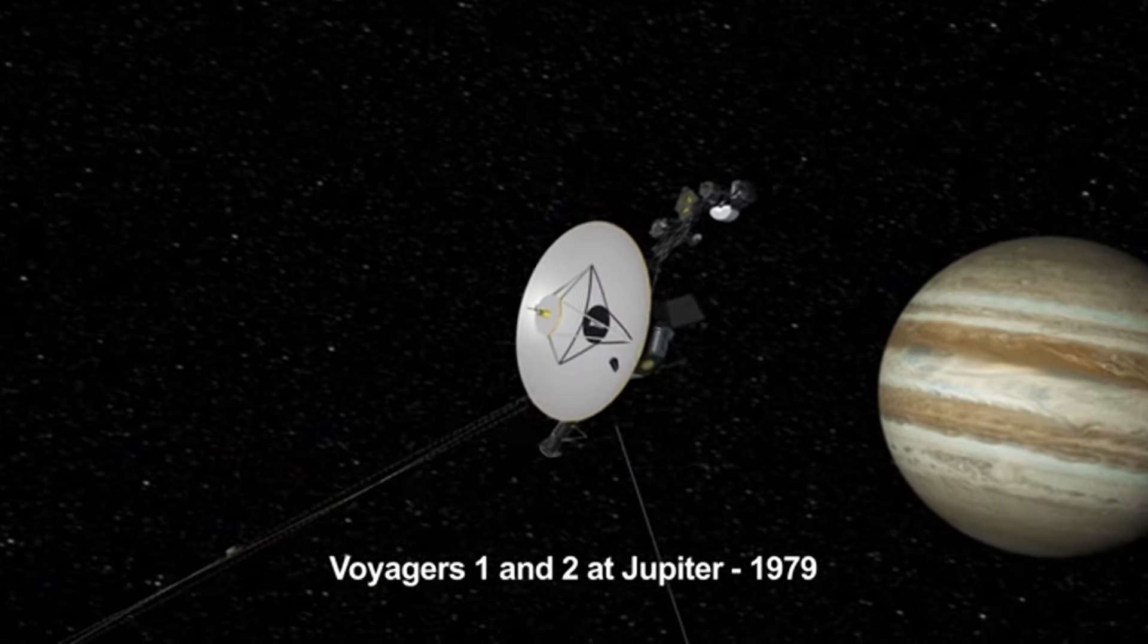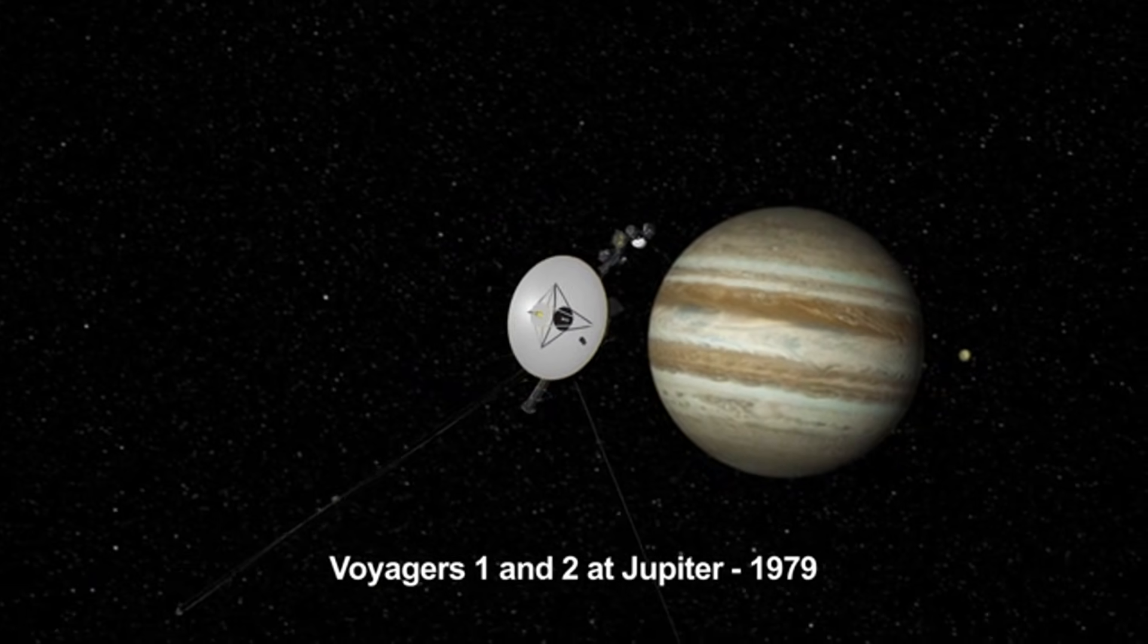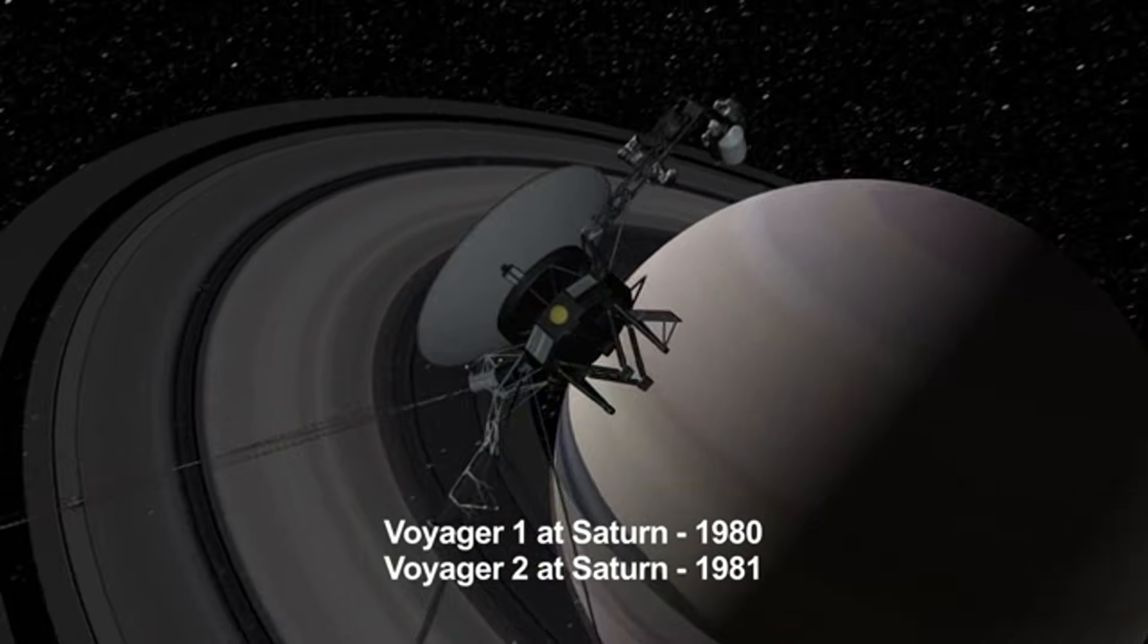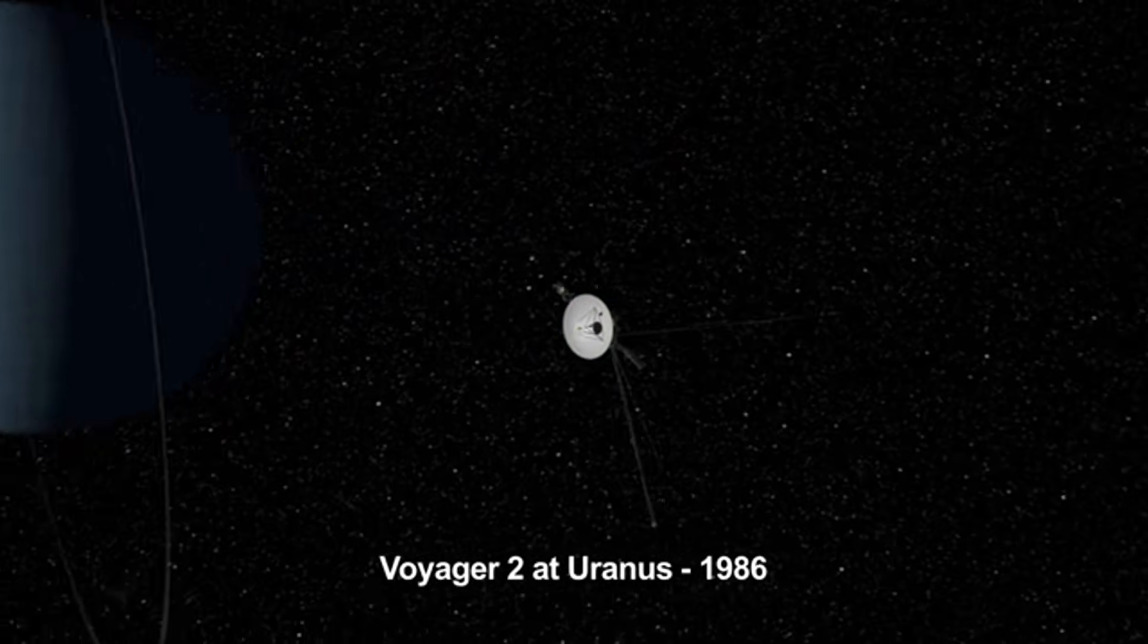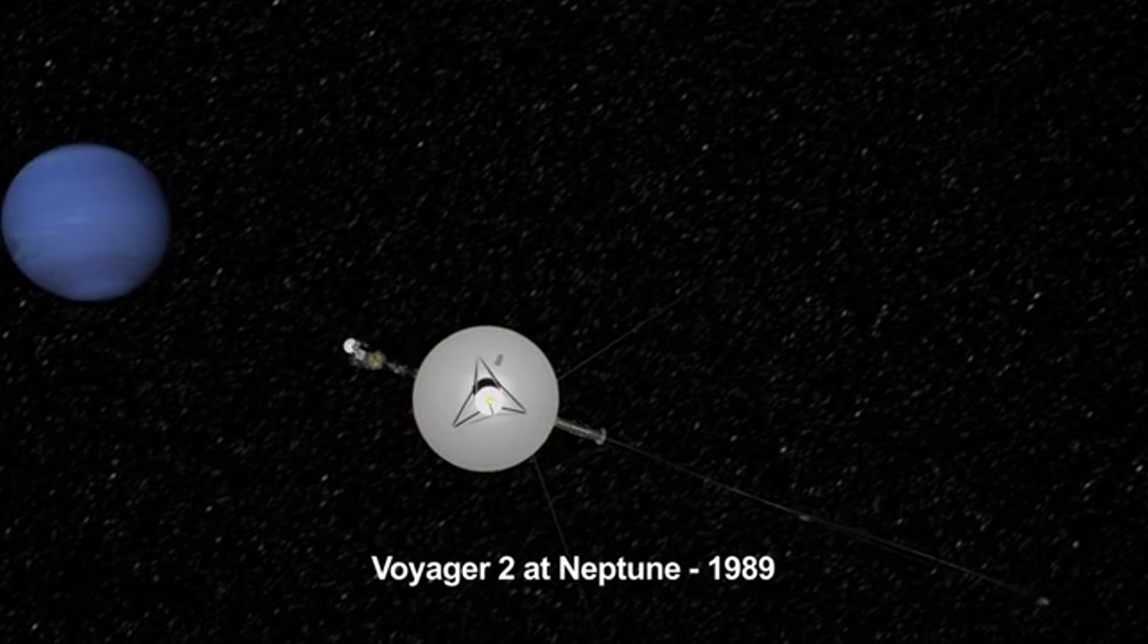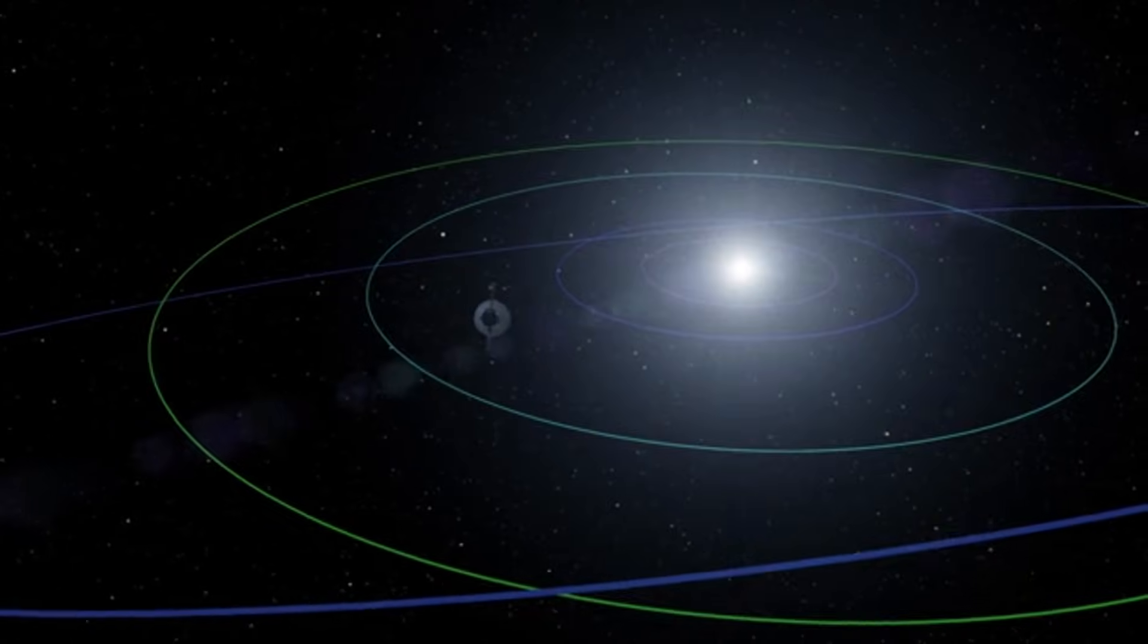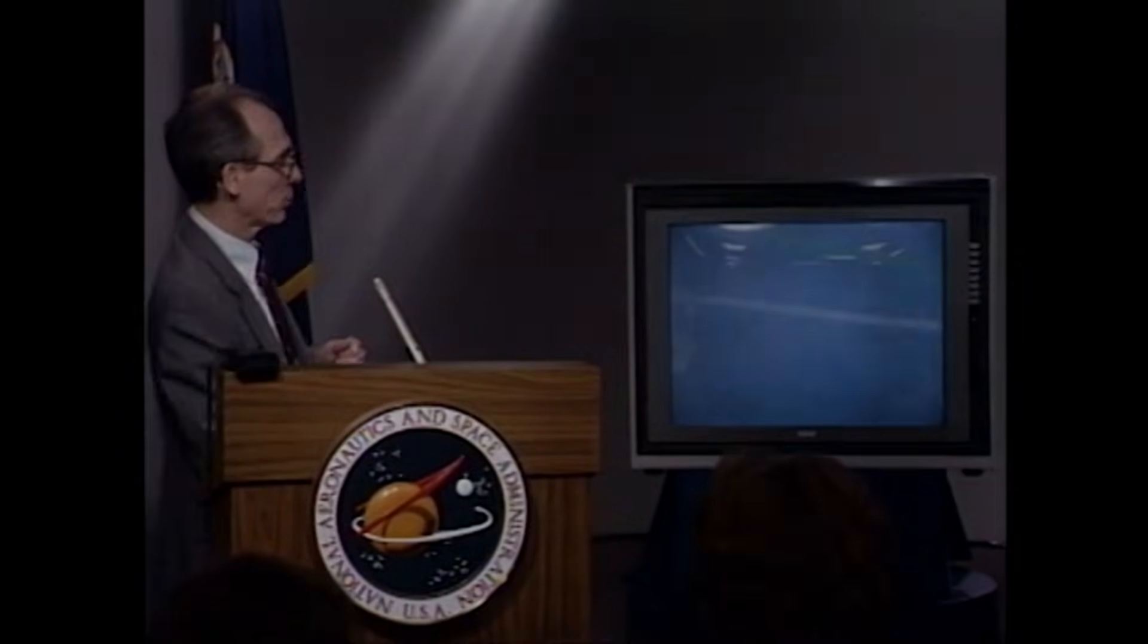Why were the cameras shut down? The reason was to save power for the instruments needed to study interstellar space, a decision that meant Voyager would never take another photograph again. Every image you've seen in this video, every dot, every pixel, represents the last moments Voyager's cameras were ever active. Today, both Voyagers continue their journey outward, far beyond the planets, drifting through the quiet darkness between the stars. This final look back remains their last message in light. A small, fragile snapshot of home, captured by the farthest explorers we've ever set free.